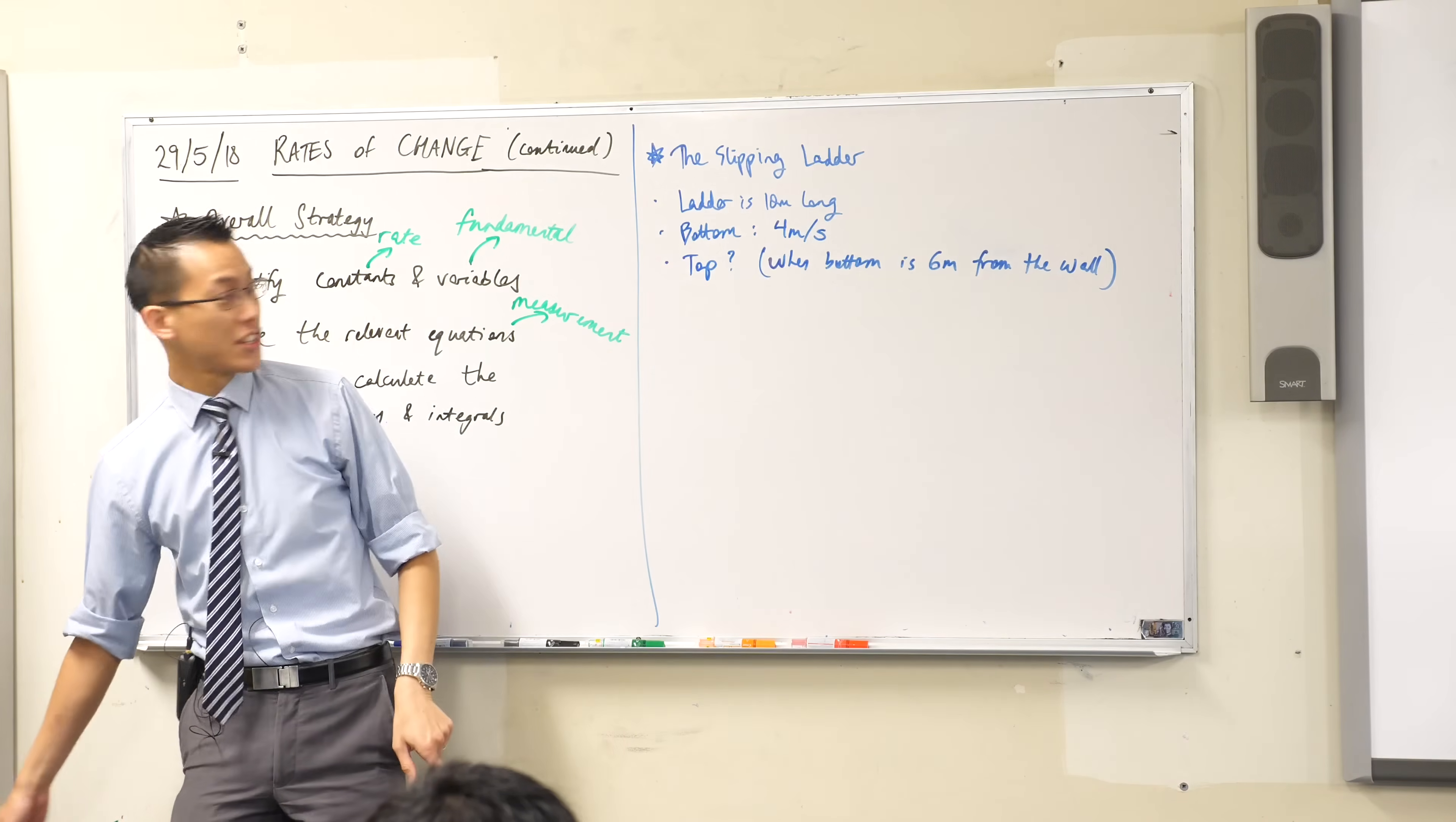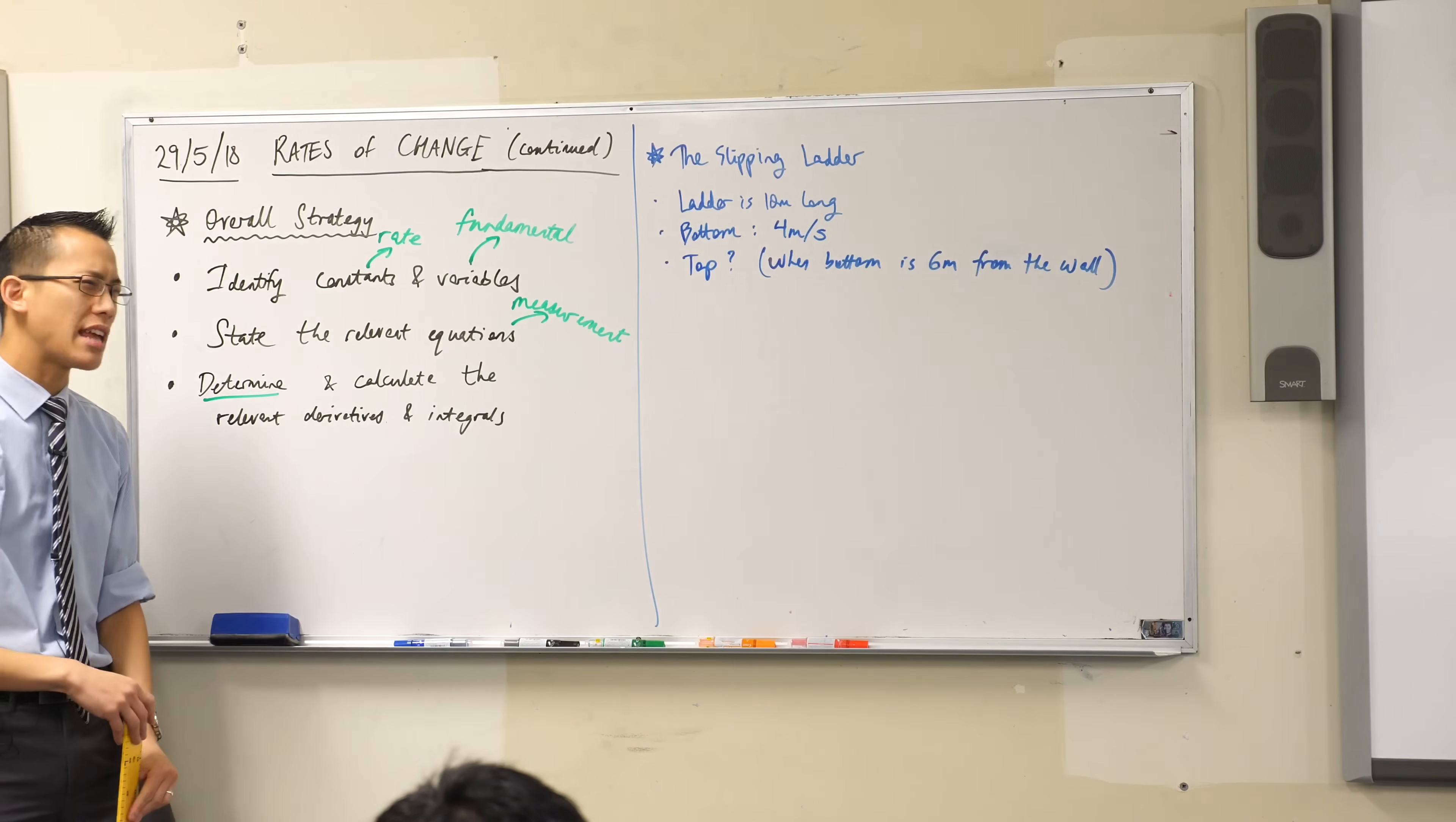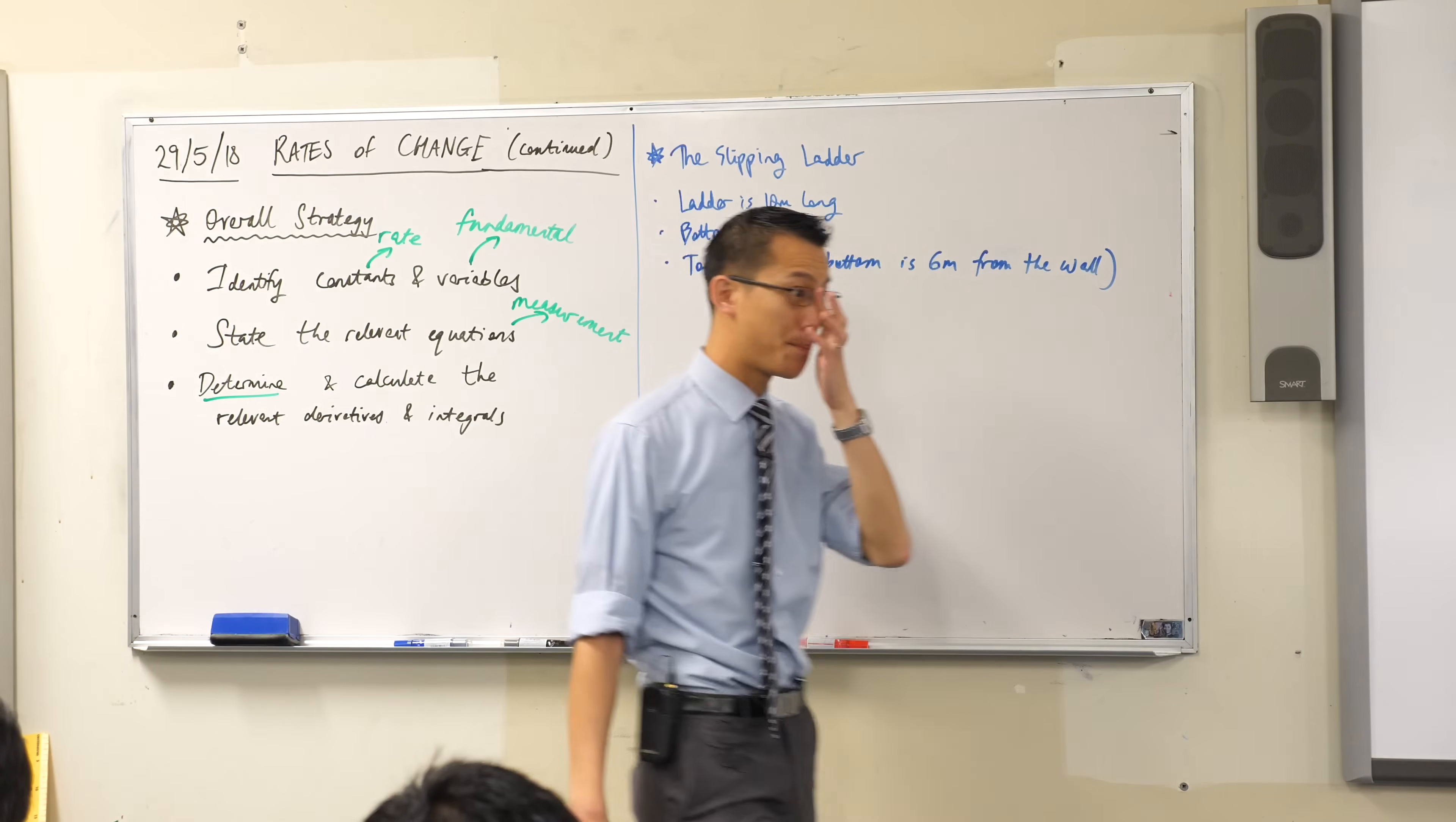Now, I've intentionally not given you any kinds of pronumerals or anything like that. I haven't drawn a diagram, even though I've waved this around enthusiastically, so hopefully you can understand the picture in your head. I want you to see if you can step through this on your own. Can you identify what's constant, what varies? Where are the rates of change in this? I haven't stated any derivatives or anything like that. You have to work that out yourself.